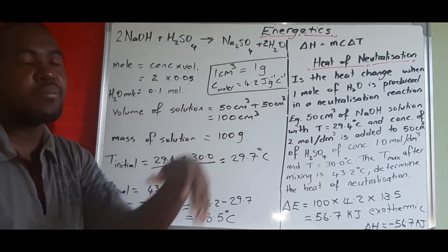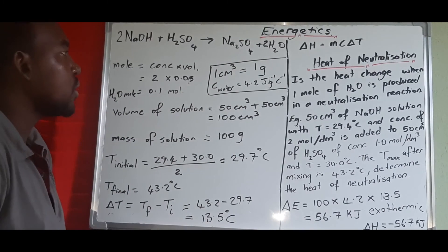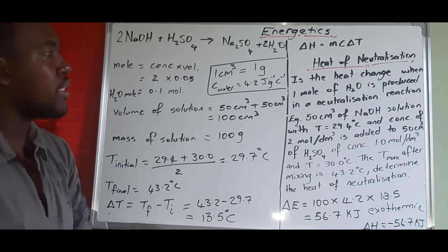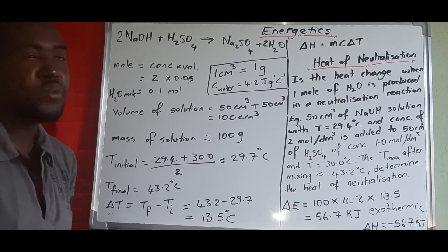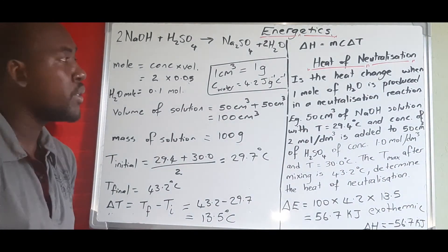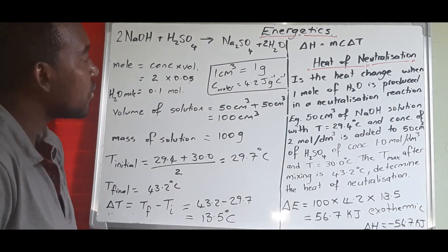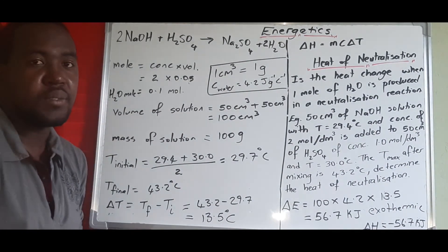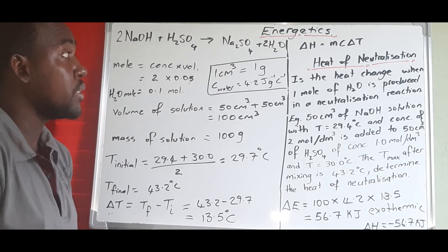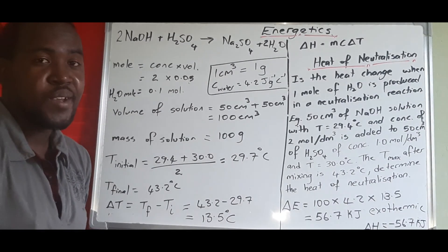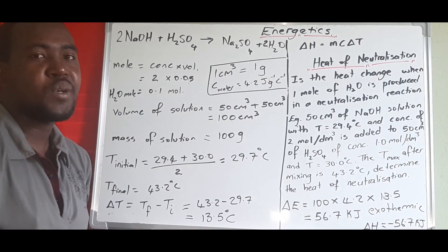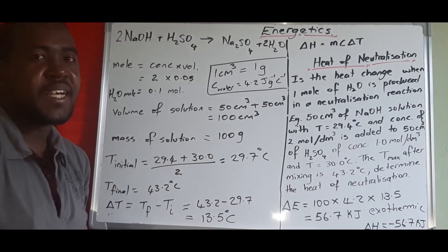The key constants to remember are: 1 cm³ of any solution equals 1 gram, and the specific heat capacity of water c = 4.2 J/g/°C. Thank you very much for watching, and see you next time.